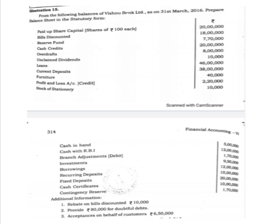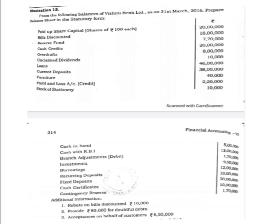Now let us discuss where each item should appear, that means under which note number we have to show each of these items. Paid up share capital should be shown in note number 1, that is under share capital. Bills discounted — the bank has discounted the bills of the customers and given the bill amount after discounting, so it should be taken under note number 9, that is advances. Reserve fund should be shown in note number 2, that is under reserves and surplus. Cash credits is a kind of advance, so it should be shown in note number 9. Overdrafts is also a kind of advance, so it should also be shown in note number 9.